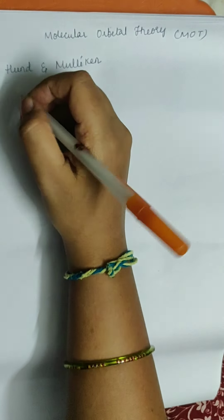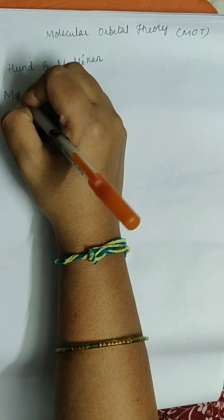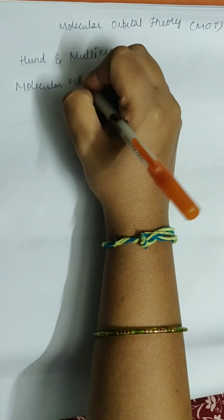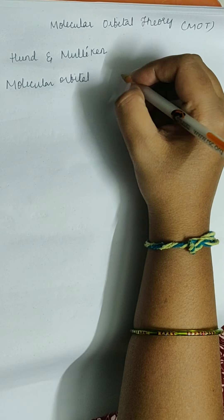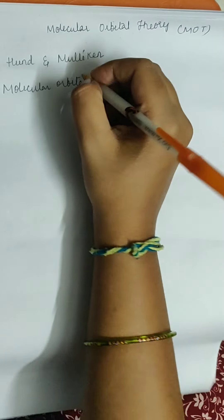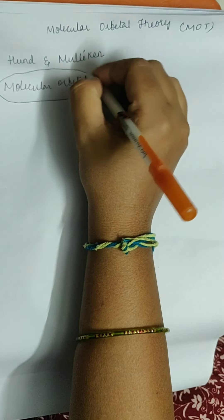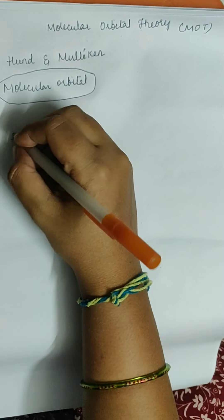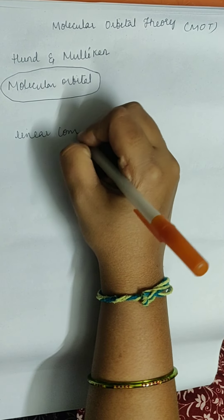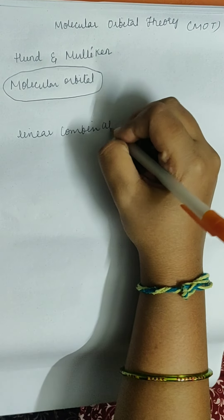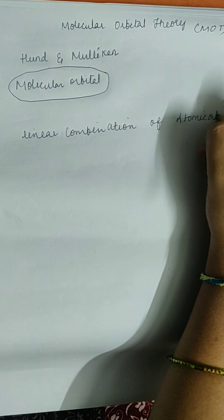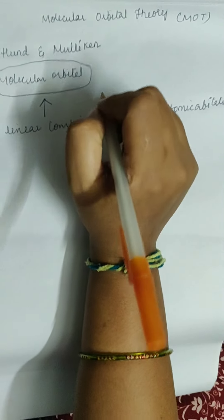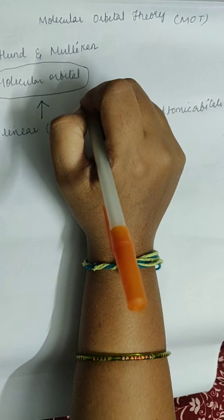This theory states that a molecular orbital is formed by the linear combination of atomic orbitals (LCAO). So whenever atomic orbitals are combined, they give us a molecular orbital, or MO.